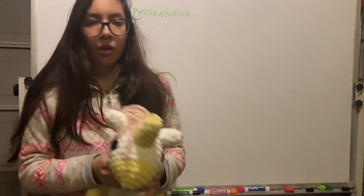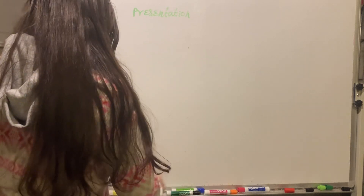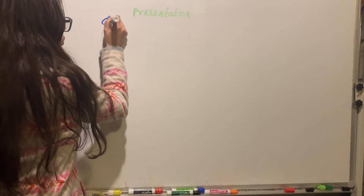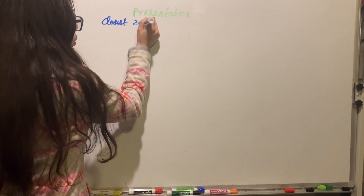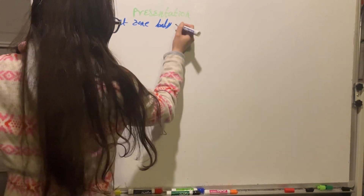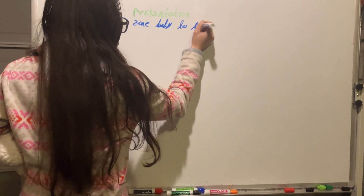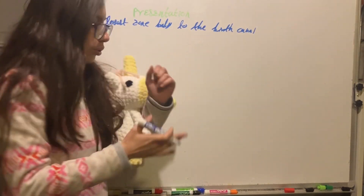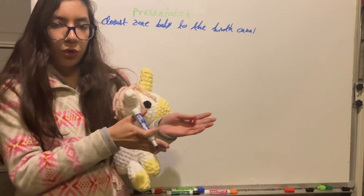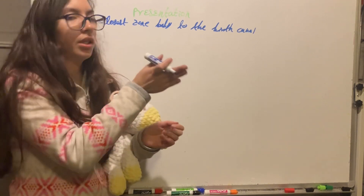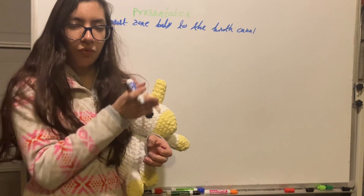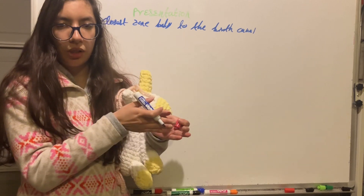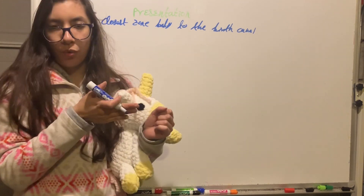We're going to cover the term 'presentation.' Presentation is the closest zone or part of the baby to the birth canal — the part of the baby in most proximity to the birth canal. To better understand the different types of presentation, we need to combine presentation with orientation.